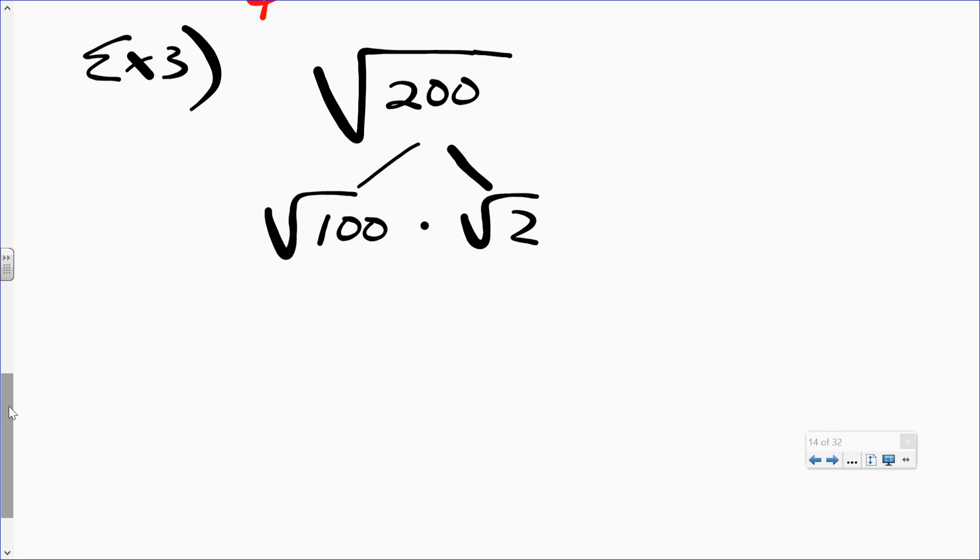Hit it. 100 and 2. Look at that. What's the perfect square? 100 is a perfect square. So that becomes 10 rad 2.